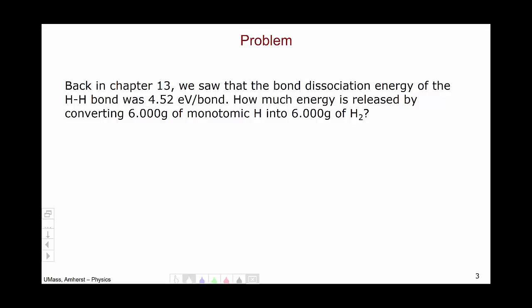First, we need to determine how many atoms of hydrogen that we have. Because we know the energy per bond, we need to know how many bonds we're going to have, which means we need to know how many atoms we have. So we have 6 grams of hydrogen, and we know that 1 mole of hydrogen is 1.008 grams of hydrogen.